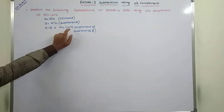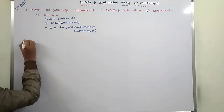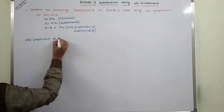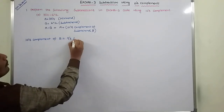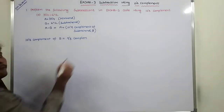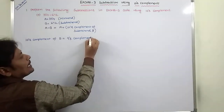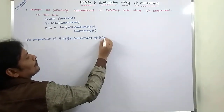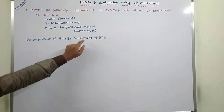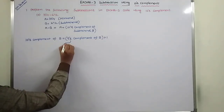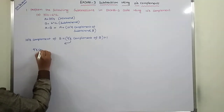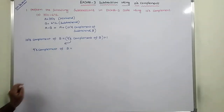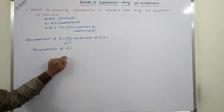First we have to find out the ten's complement of subtrahend B. The ten's complement of B equals the nine's complement of B plus 1. The formula for ten's complement is: nine's complement of the given number plus 1. So we first find the nine's complement of B.